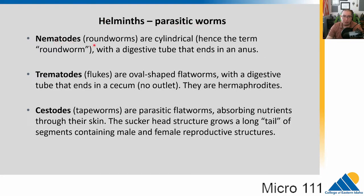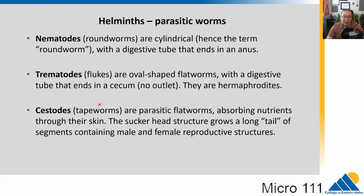We are going to start with the helminths, the parasitic worms. Helminth is another word for a parasitic worm. We have three basic groups. Nematodes are roundworms, which are cylindrical — basically a long digestive tube that ends in an anus. Flukes are flatworms, the trematodes; they're oval-shaped with a digestive tube that ends in a cecum — no outlet — and they're hermaphroditic. Cestodes are tapeworms, parasitic flatworms that absorb nutrients through their skin, often creating a head sucker with a grabber structure and a long tail of segments, containing male and female reproductive structures.